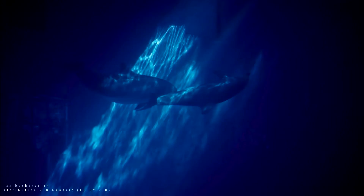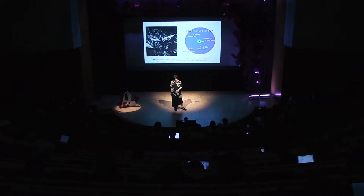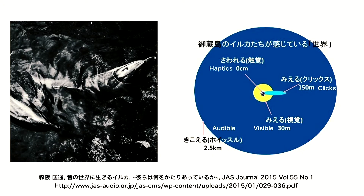The dolphin communicates in the sea, and because of the water medium they can transmit information to each other. They can see the world as visible information up to 30 meters, and they can also see using sound information up to 150 meters. They can transmit information between individual species up to 2.5 kilometers.